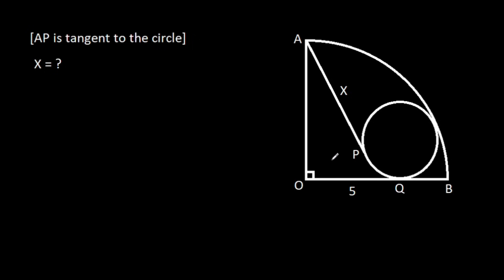In this video, we have been given a circle inside a quarter circle and OQ is 5, AP is X, then we have to find X.